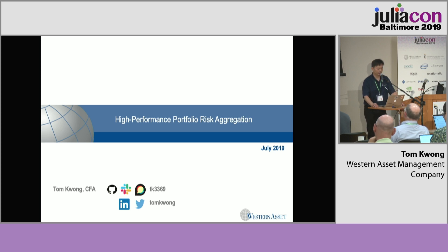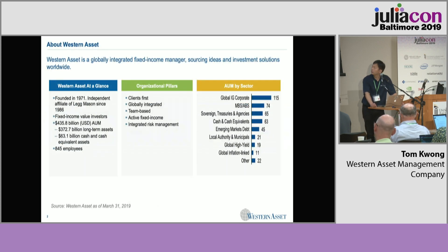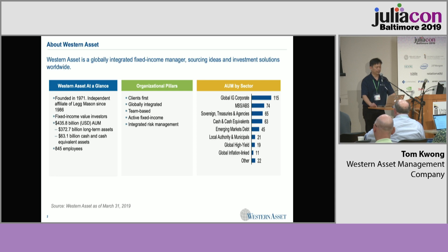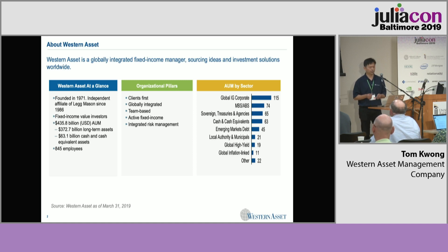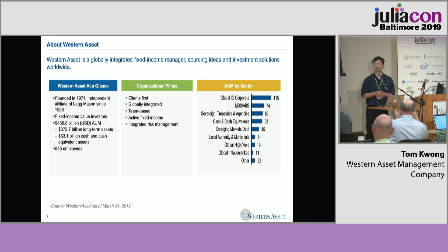Hi everyone, my name is Tom. I work for a company called Western Asset, and today I'm going to share with you a use case about risk management in the financial services industry. Western Asset is a globally integrated fixed income manager. We treat our clients as our first priority and have a globally integrated team, meaning everyone working in a global location works with each other to service our clients. We also have an integrated risk management crew that works very closely with portfolio managers and client service executives. Western Asset has about $436 billion in assets under management as of end of March 2019.